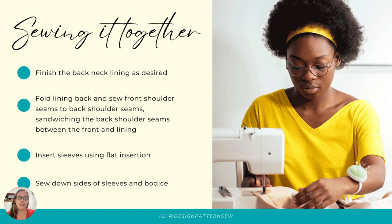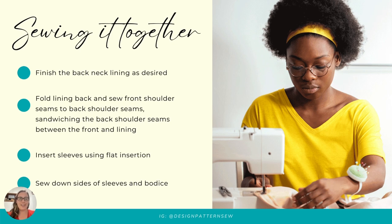Once we're ready to sew it all together, we'll start with our back pattern piece. We're going to finish the back neckline as desired. Then we'll fold our lining around the back neckline and around the shoulder seams so that we sandwich the back shoulder seams between the front and lining piece. We'll sew our shoulder seams with a piece of clear elastic or bias cut fabric in order to give them stability over time. Once our shoulder seams are sewn together, we'll insert the sleeves using the flat insertion method. Then we'll sew down the sides of the sleeves and bodice, and we could hem our shirt and sleeves as we normally would.